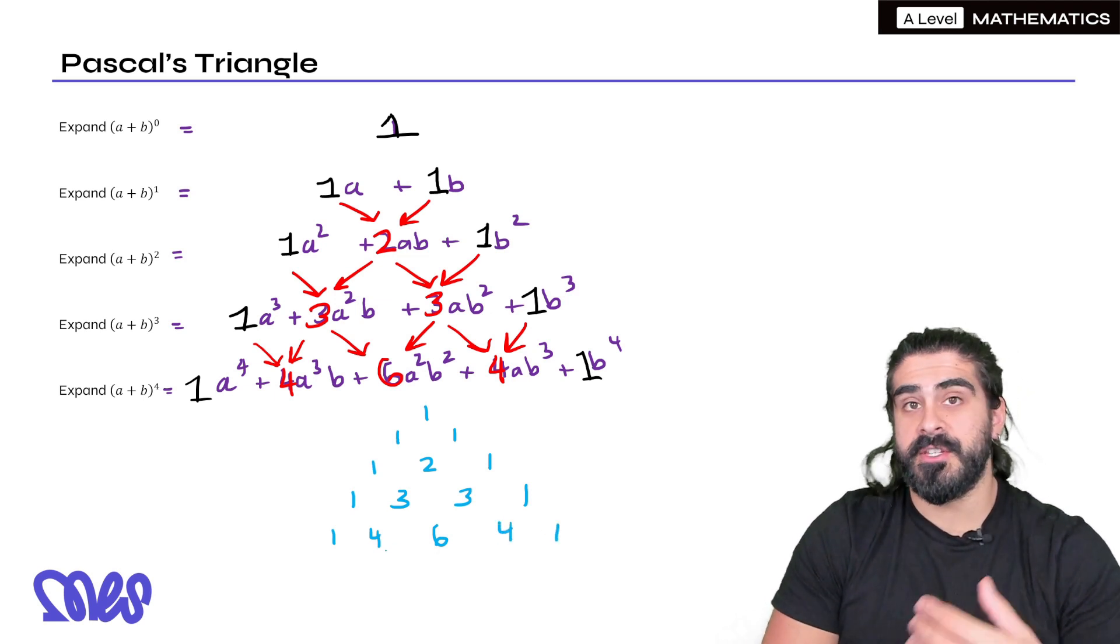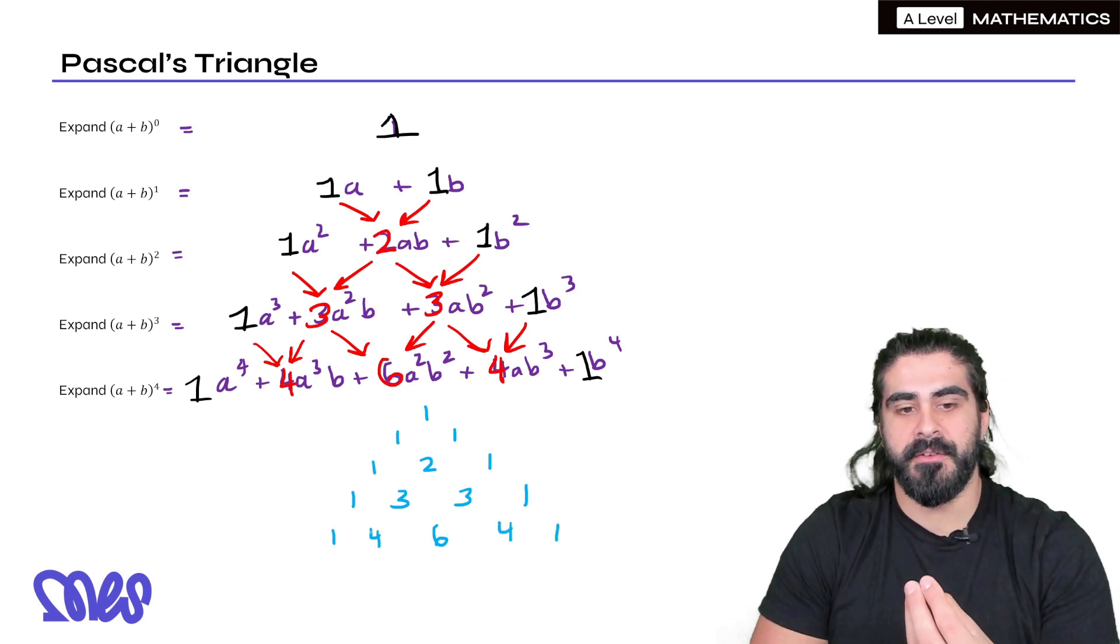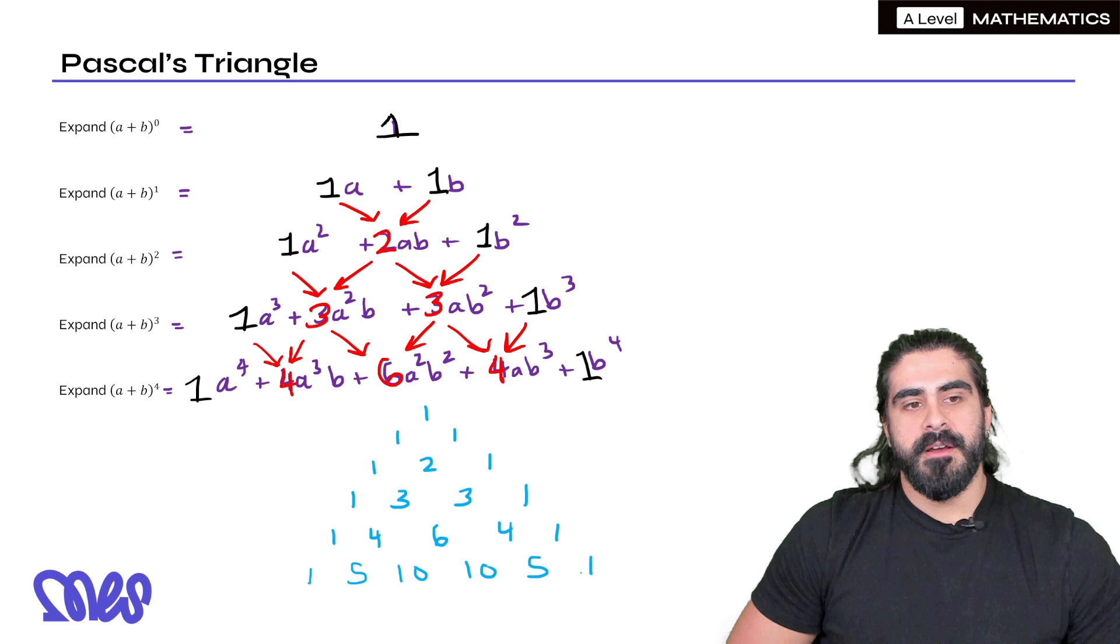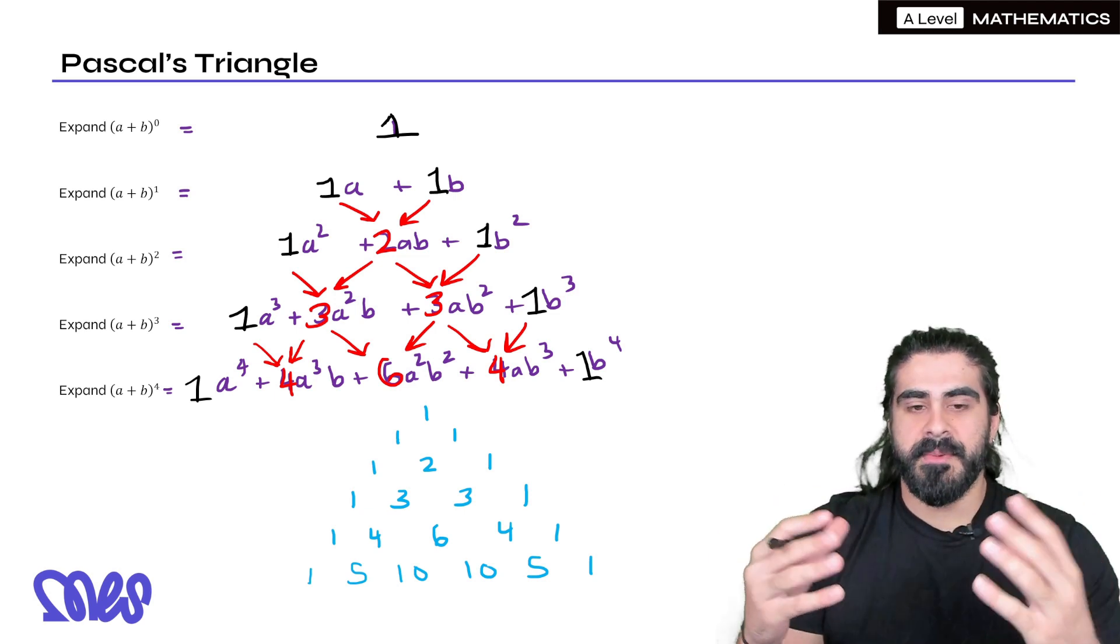If we were to do another line, so this would be if you're expanding a bracket to the power of 5, the coefficients would be 1, 1 plus 4 is 5, 4 plus 6 is 10, another 10, another 5, and 1. So by knowing Pascal's triangle you can do any expansion.